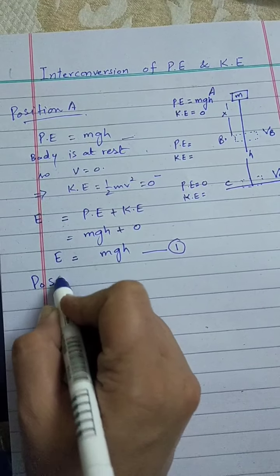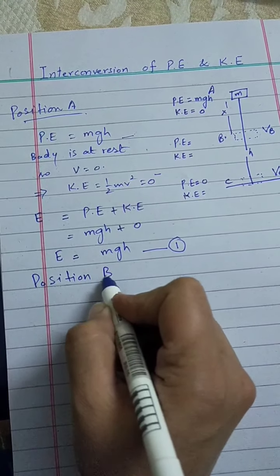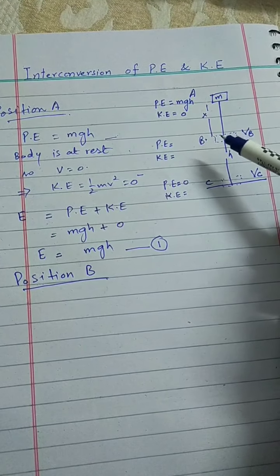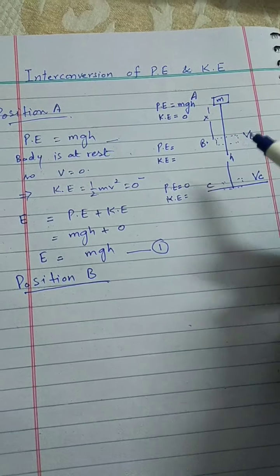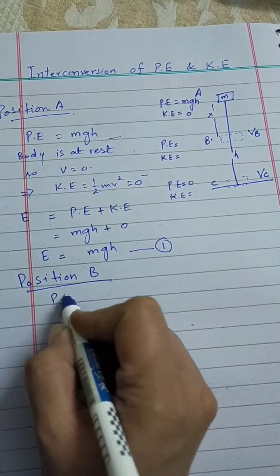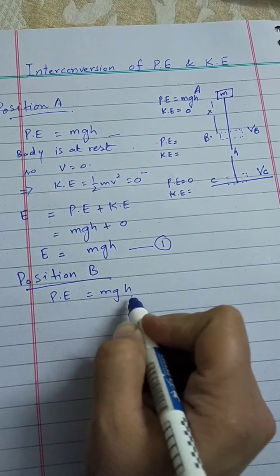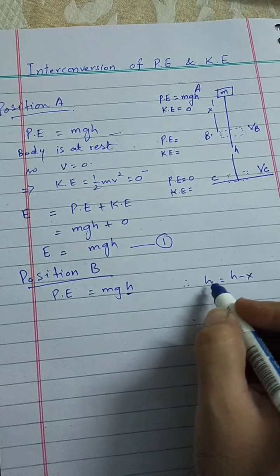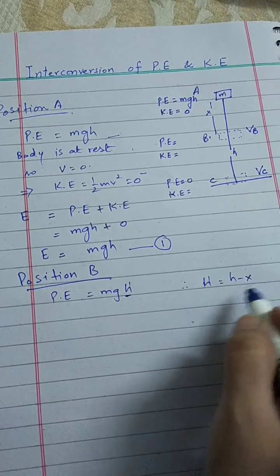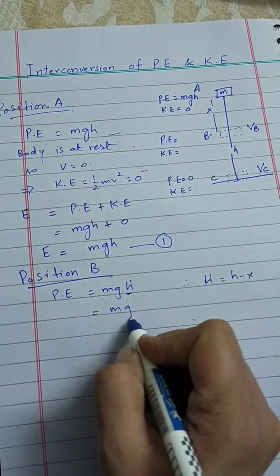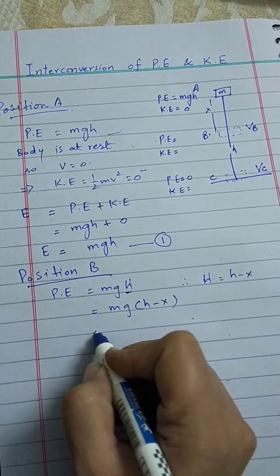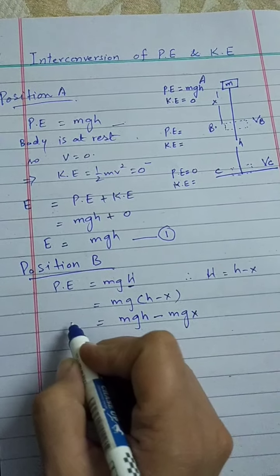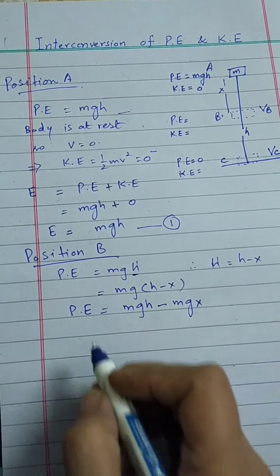Now we move to position B to find the total energy there. The body has covered a distance x while reaching point B, so the potential energy will be mg(h − x), since the height h is replaced by h − x. Opening the brackets: mg multiplied with h minus x gives mgh minus mgx. This is the equation for potential energy at position B.